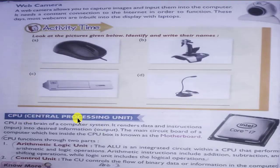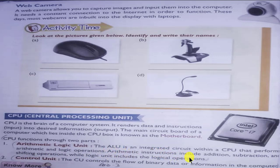Question 3: how does the CPU function? Answer: CPU — central processing unit — functions through two parts. One: arithmetic logic unit — the ALU is an integrated circuit within a CPU that performs arithmetic and logical operations. Arithmetic instructions include addition, subtraction, and shifting operations, while the logic unit includes logical operations. Two: control unit — the CPU controls the flow of binary data or information in the computer.